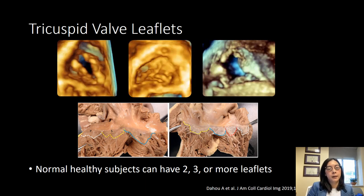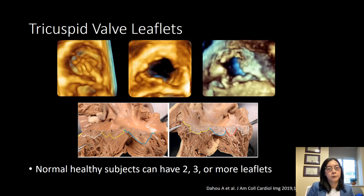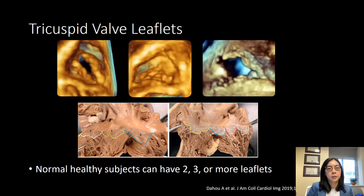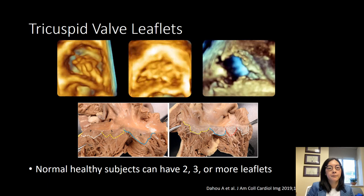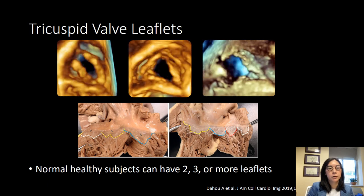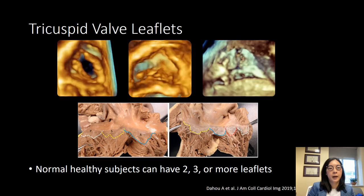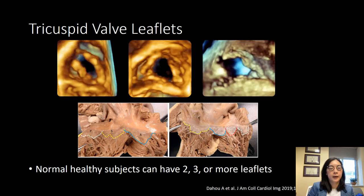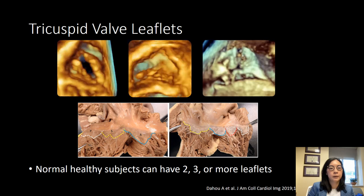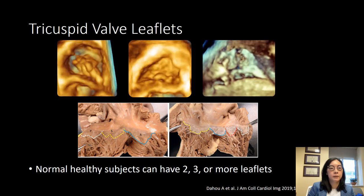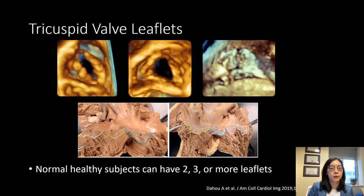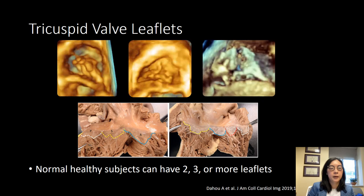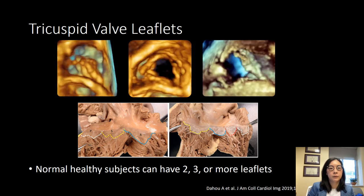The tricuspid valve leaflets can actually vary greatly in number. Normal subjects can have between 2, 3, or more leaflets. In the literature, there have been cases of patients with up to 6 leaflets. If you look at the top row of images, these are 3D transthoracic images of the tricuspid valve as viewed from the right ventricle. The septum is located at the 6 o'clock position. The anterior leaflet is generally at 3 o'clock and the posterior leaflet around 9 o'clock. The top leftmost image shows a patient with 2 leaflets, the middle 3 leaflets, and the right has 4.